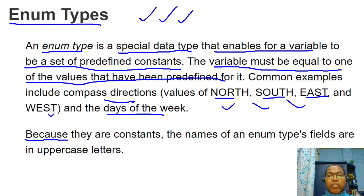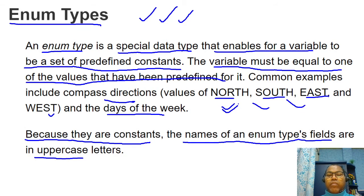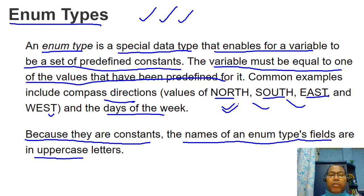Because they are constants, the names of enum type fields are generally written in uppercase. This is a general guideline: whenever you are defining any constant variable, you should follow uppercase letters. This is the convention that developers should follow.